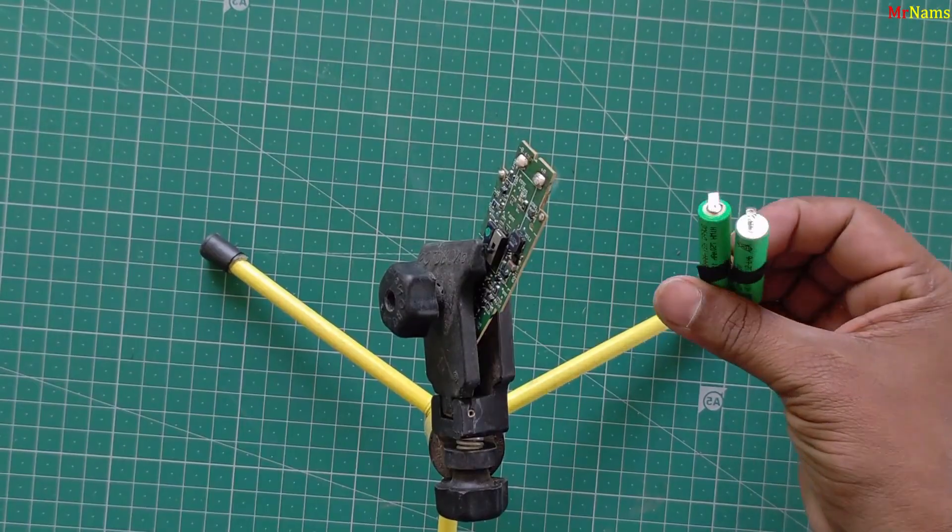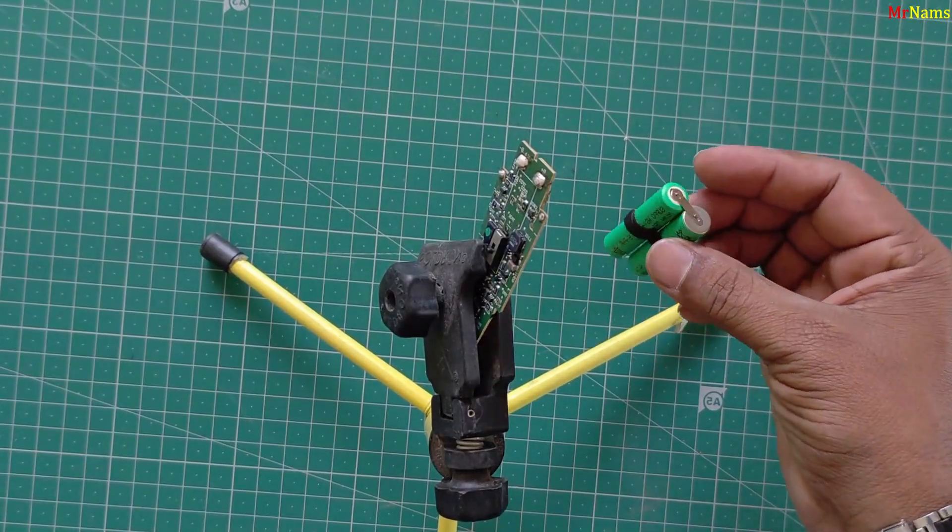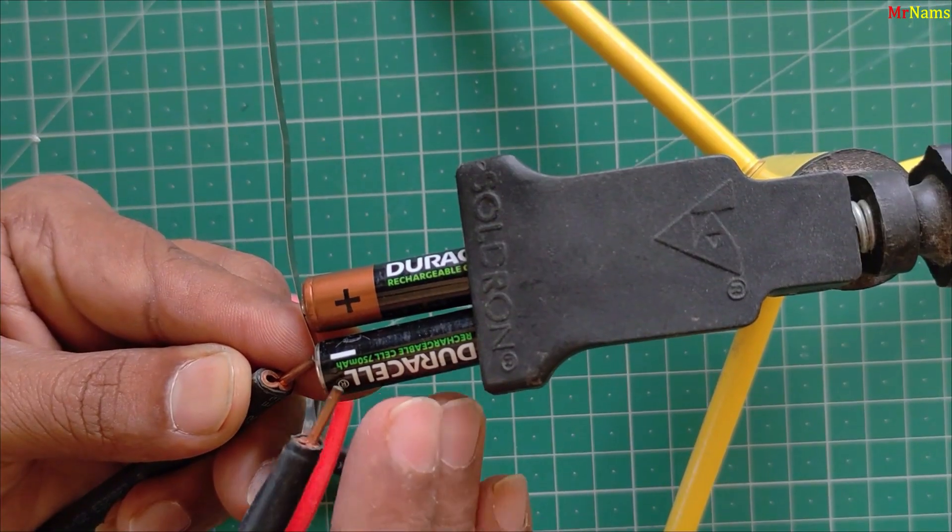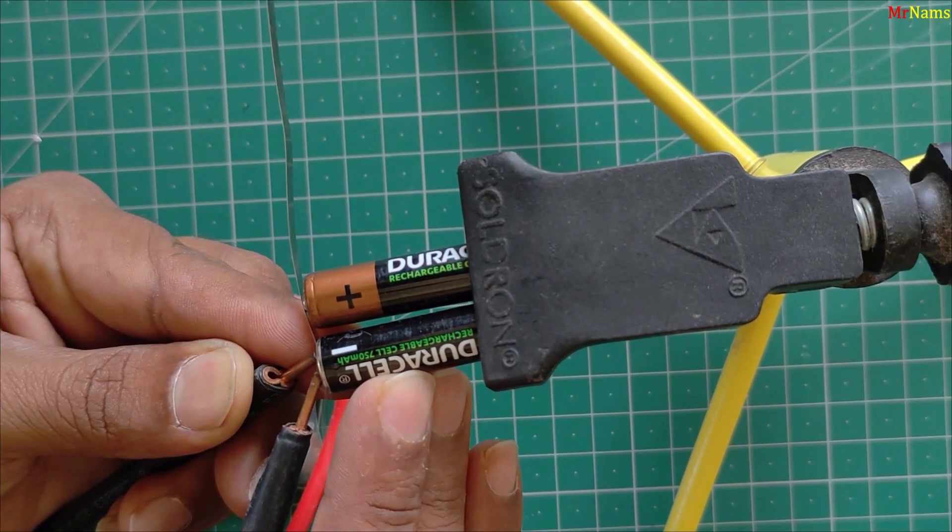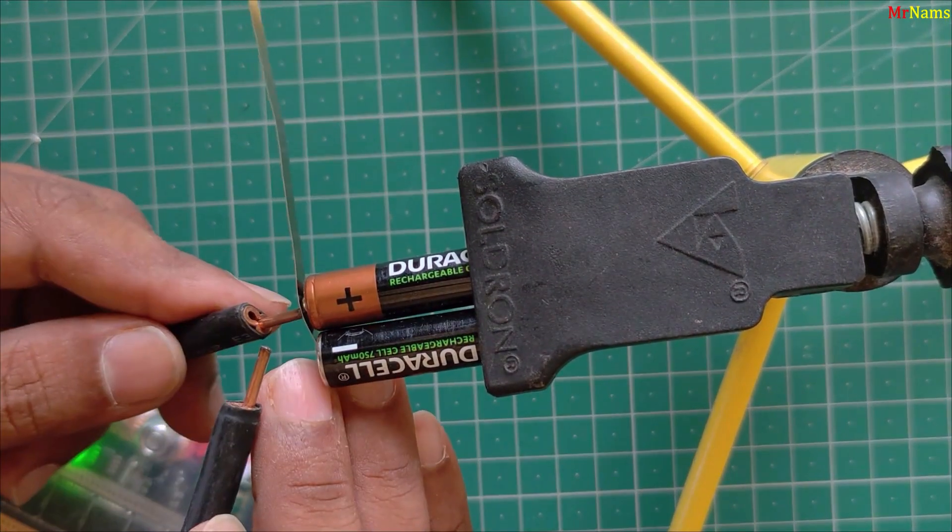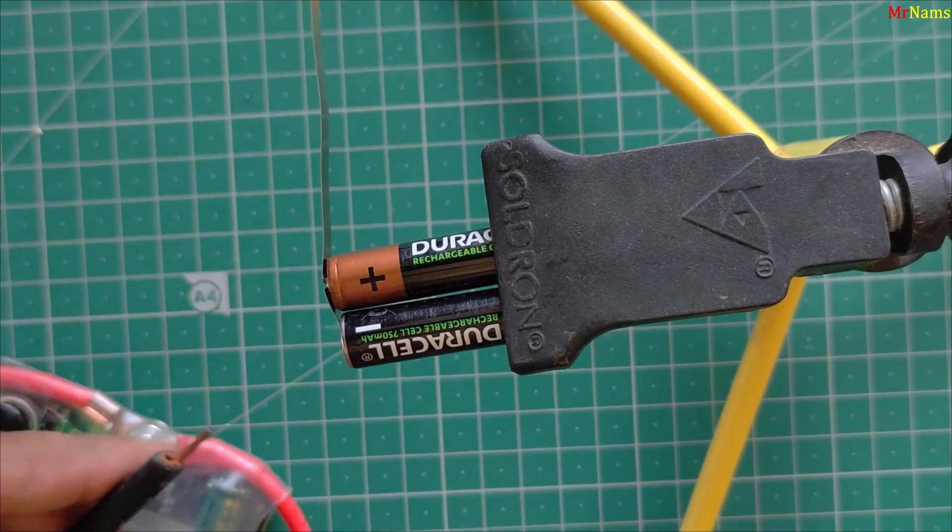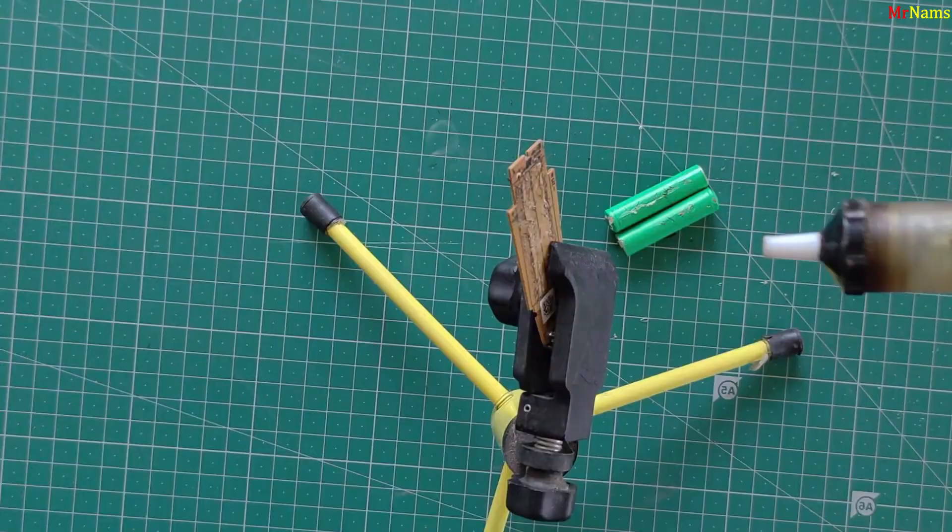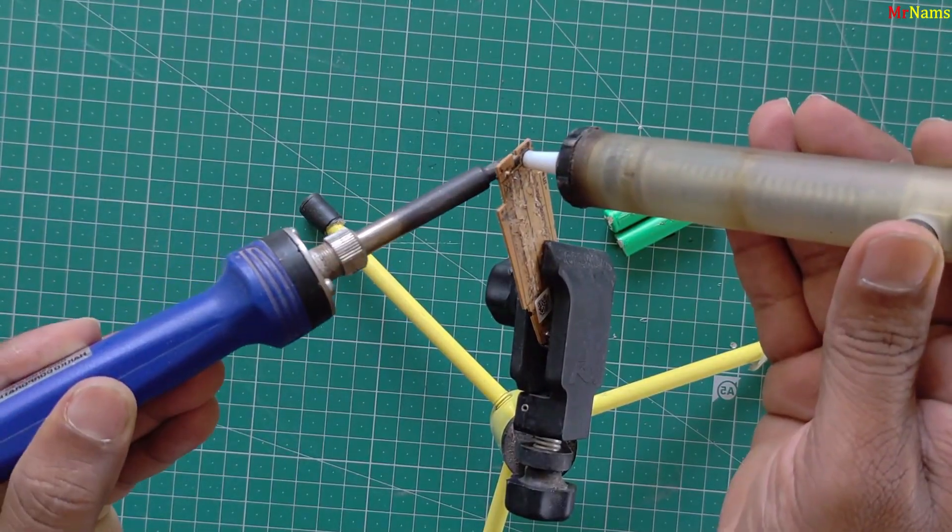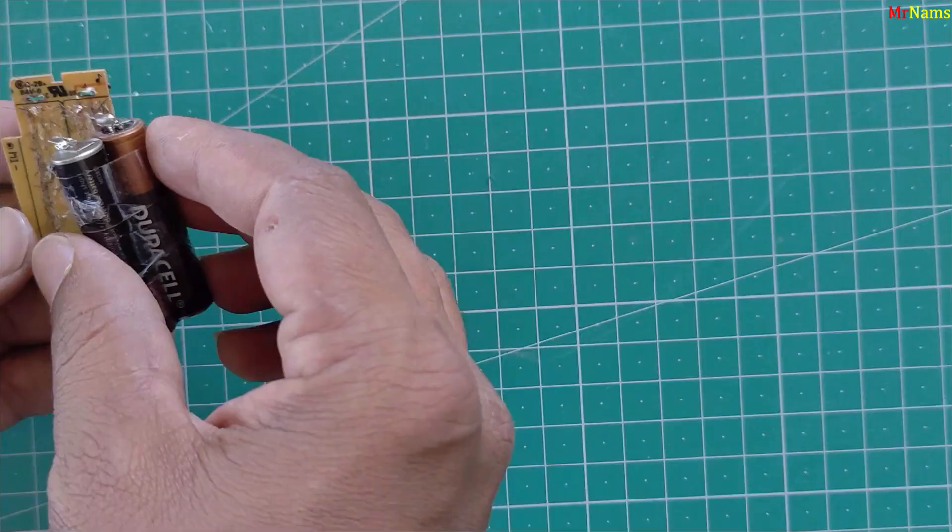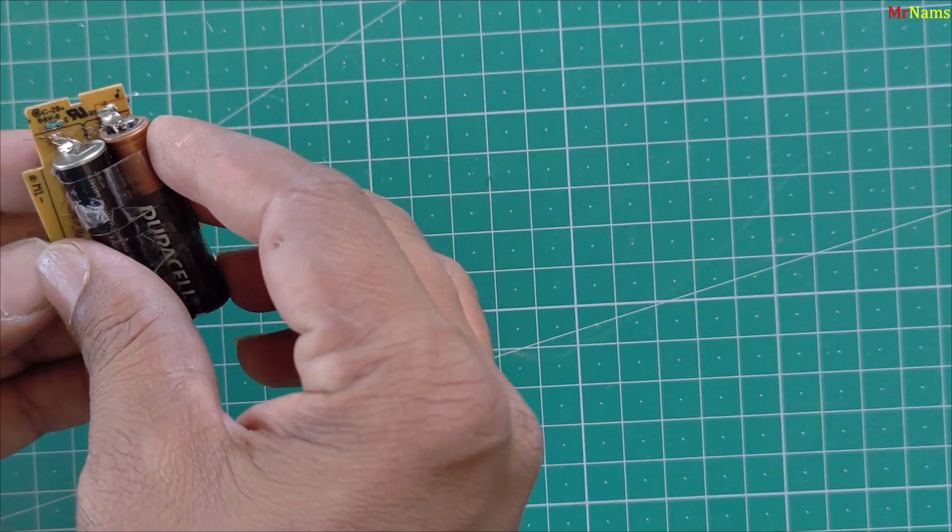Step 4. Install new batteries. Spot weld two new rechargeable cells together. Solder the new cells back onto the PCB in the same polarity as the old ones.